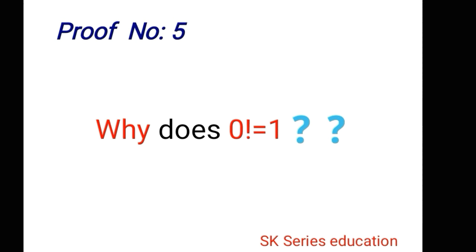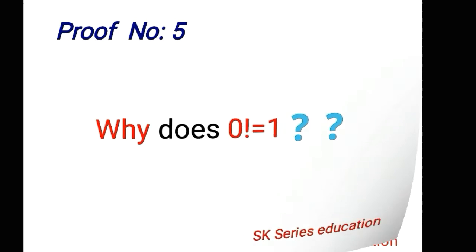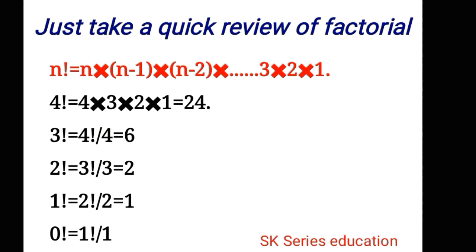Proof number five: why does zero factorial equal to 1? Have you wondered about this? Just take a quick review: n! = n × (n-1) × (n-2) × ... × 3 × 2 × 1. If you want to write 4! as 4 × 3 × 2 × 1, that means 24. If you write 3! as 4!/4, that means 24/4 is 6.